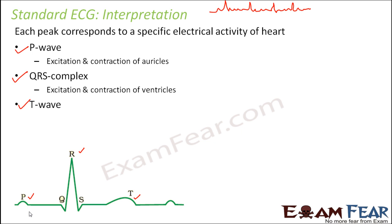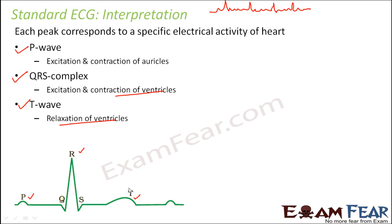When the ventricles contract, there is a high ventricular pressure, and with this pressure, blood flows out of the ventricles — this is denoted by the QRS complex. The T wave denotes the relaxation of the ventricles, which is basically the end of the cardiac cycle. After that, the same steps keep repeating. So P, QRS, and T denote the contraction of the auricles, contraction of the ventricles, and then the relaxation of the ventricles, respectively.